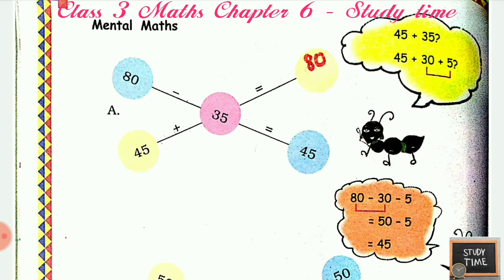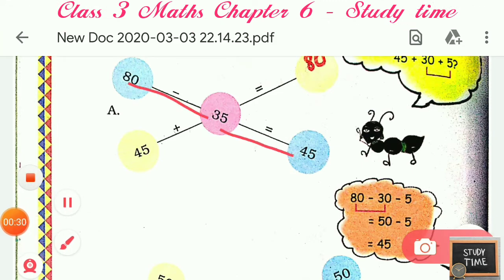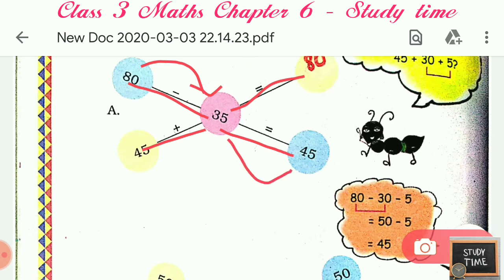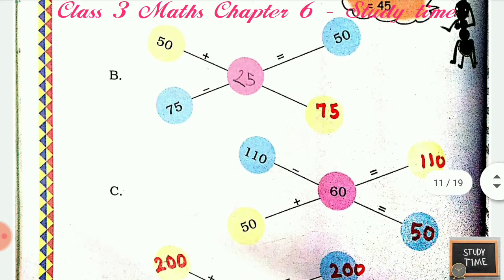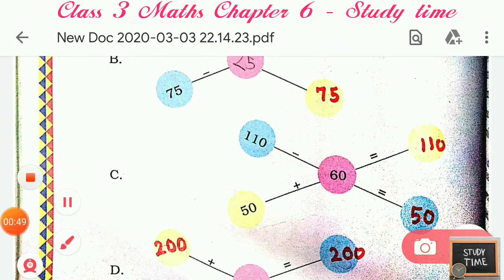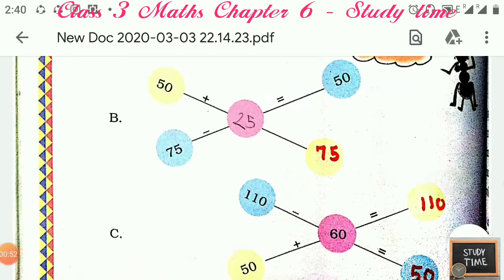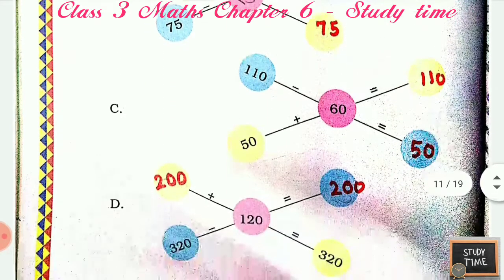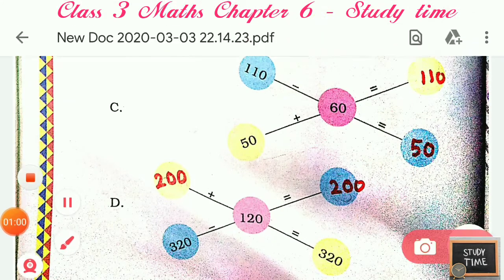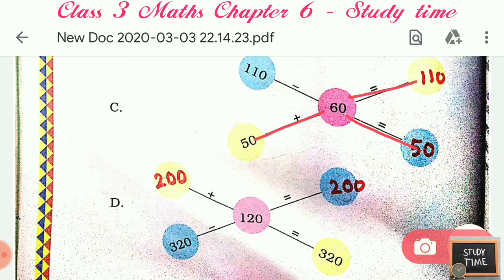Let's go. Mental Math: what you have to do is, here they have given numbers and you have to make them equal along the sides. So 80 minus 35 is 45, and 45 plus 35 is 80. Along each side you have to make it correct. So 50 plus 25 is 75, 75 minus 25 is 50. Then 100 minus 60 is 40, 40 plus 60 is 100. Here 320 minus 120 is 200, and 200 plus 120 is 320.